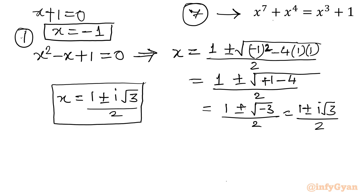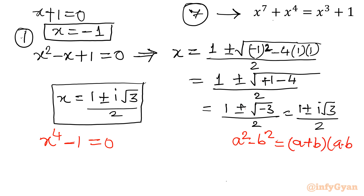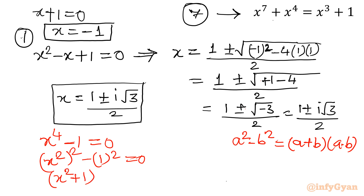Now from the first product equation, x⁴ - 1 = 0, we will get 4 more solutions. Using the difference of squares identity, a² - b² = (a + b)(a - b), we can write x⁴ - 1 = (x² + 1)(x² - 1) = 0. So either x² + 1 = 0 or x² - 1 = 0.